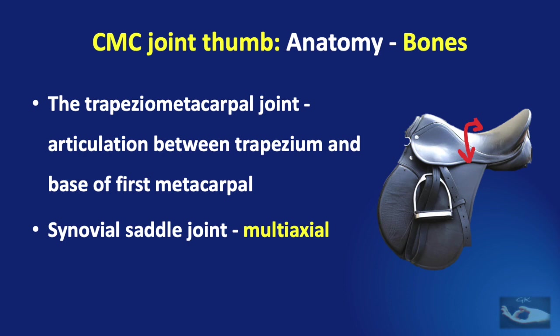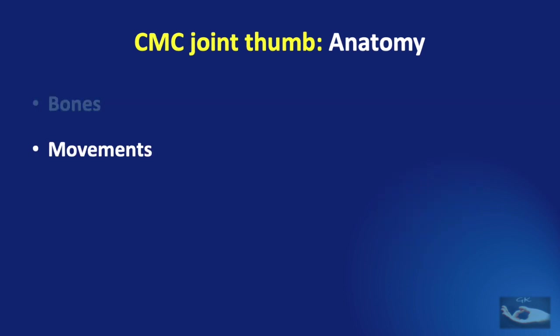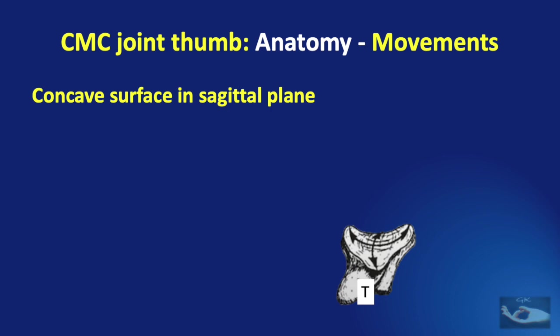This allows the rider of the horse a lot of mobility. When we compare the carpometacarpal joint of the thumb to a saddle joint, we need to understand which is the saddle, which is the rider, and what movements are possible. The trapezium is the saddle-like structure — it is concave in one direction and convex in another.